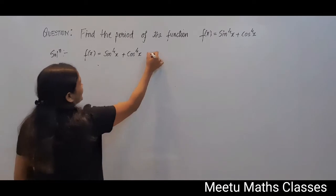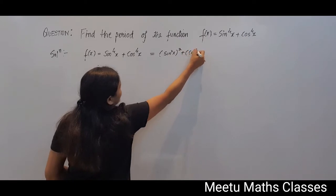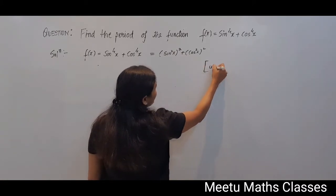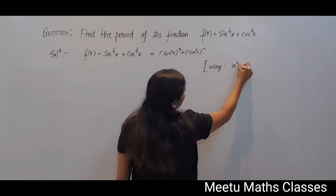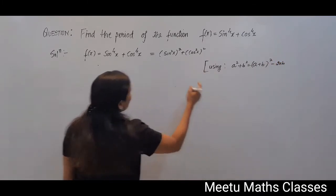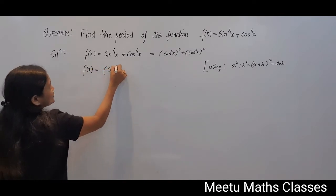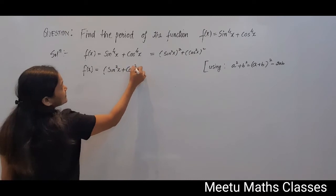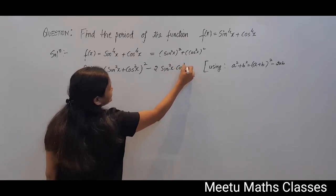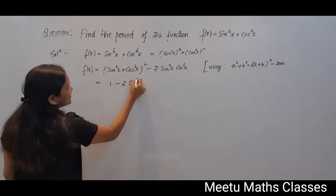Now applying the formula a² + b² = (a+b)² - 2ab, we can write f(x) as (sin²x + cos²x)² - 2sin²x·cos²x.